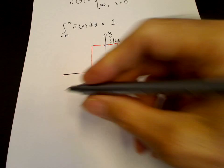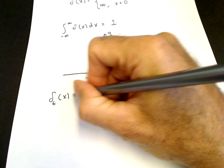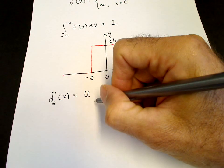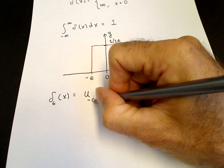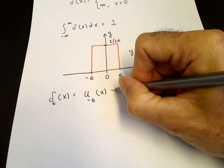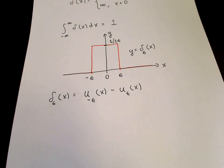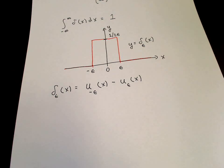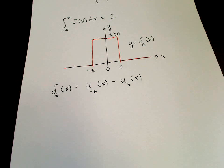If we want to write formally what delta_epsilon of x is, it's a step-up step-down function — a step function that steps up at minus epsilon and then steps down at plus epsilon. That's a formal representation of the delta function — not quite the delta function, but an approximation to the delta function using two step functions.